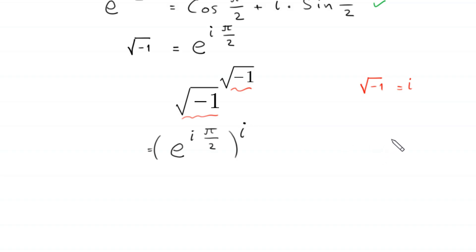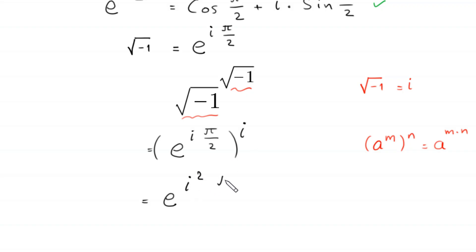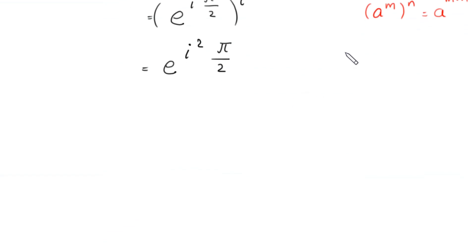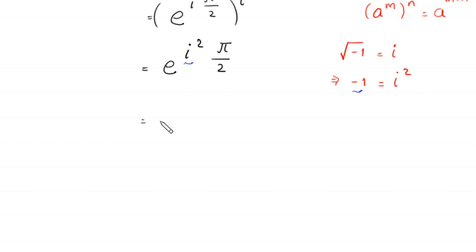Now, by using the property of exponents — a to the power m, whole to the power n, is equal to a to the power m times n — this expression will become e to the power i times i squared times pi over 2. Because i squared equals negative 1, we replace i squared with negative 1, and this becomes e to the power negative 1 times pi over 2.